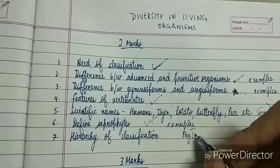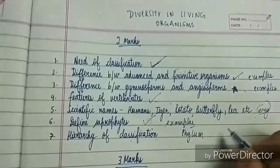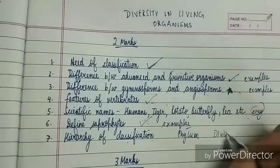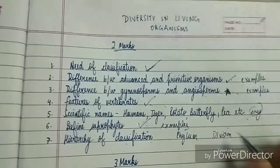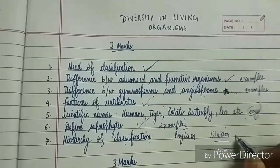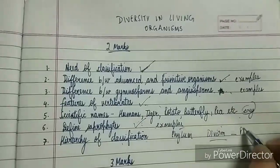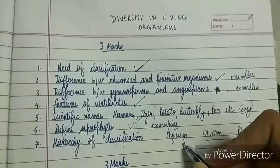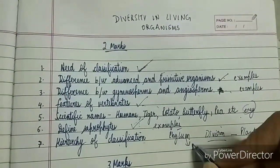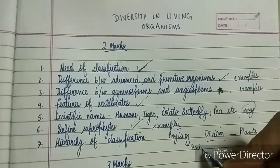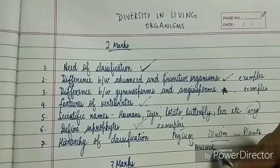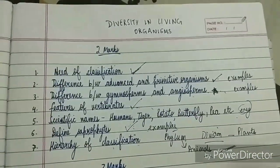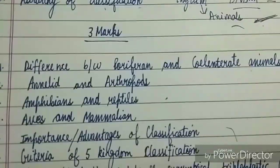Another important topic is the hierarchy of classification. From here, questions can be asked on phylum and division. Division is for plants and phylum is for animals. This can also be asked in one mark, so take care of this.